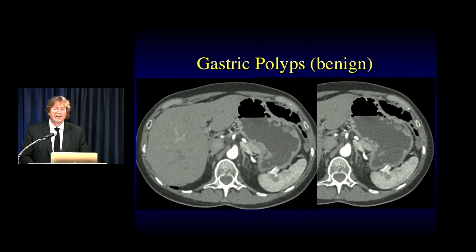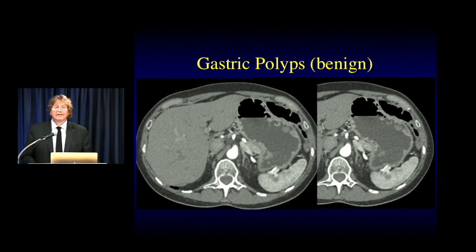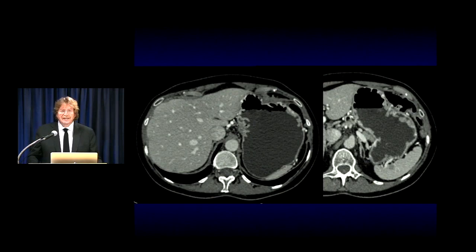Here's that same patient when the stomach is distended. In the prior example, the patient was going for EUS to look at a small pancreatic lesion and we couldn't give water. When the stomach's distended, you can see the patient is lined by polyps — over 100 adenomatous polyps, all benign. Look how easy it is to see the polyps when the stomach is distended; when it's not distended, there's no way to see them.